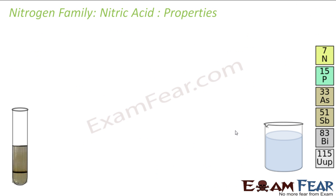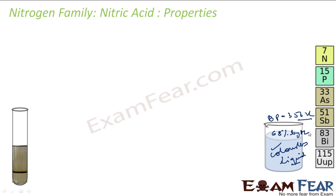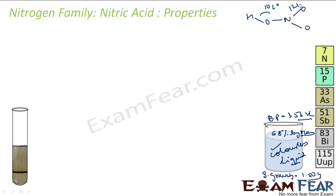Now let's talk about the properties of nitric acid. It is a colorless liquid — you must have seen it in the lab. The boiling point is 356 Kelvin. The 68% by mass lab or industrial nitric acid has a specific gravity of 1.504. The structure of nitric acid has a bond angle of 102°, a N=O bond length of 121 pm, a bond angle of 130°, a N–O bond length of 140 pm, and an O–H bond length of 96 pm. This is experimental data.